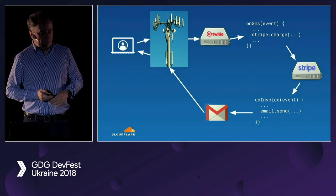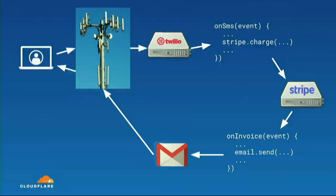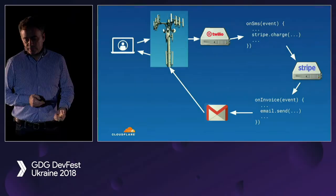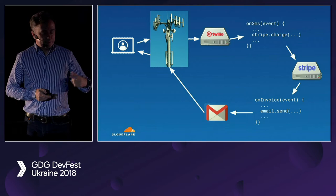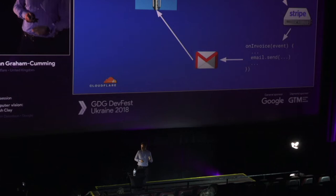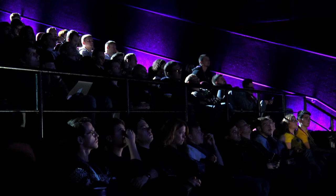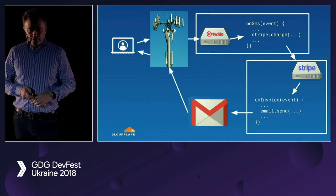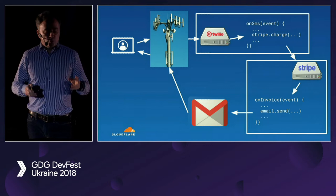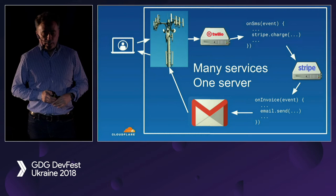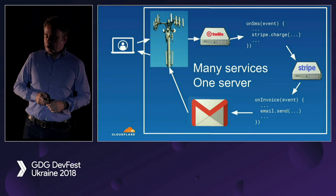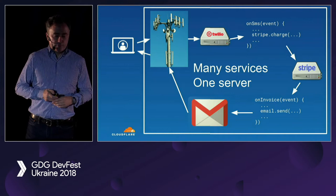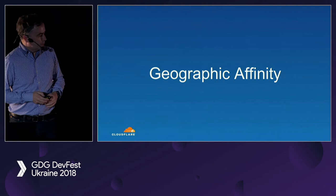Just imagine: someone's using a device, they connect to a cell phone tower, and send an SMS message. Events occur — Twilio gets the message, causes an event to happen which gets sent to Stripe, and Stripe actually sends an invoice which gets sent to an email provider. All these little discrete bits of functionality run today in different services across different locations. But another option is to run all of this inside the same service provider — many of these services running on one server. That's really what functions-as-a-service or serverless allows you to do: have many things running in the same location. That's important because of geographic affinity, where you don't want to long-haul back to data far away.